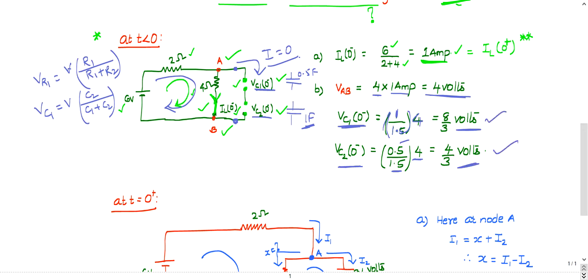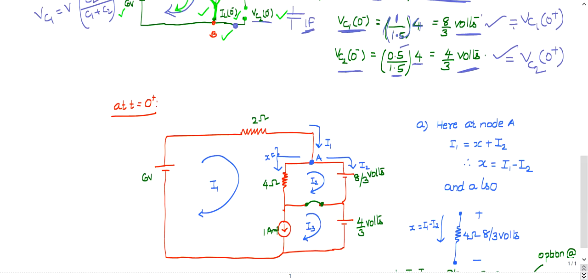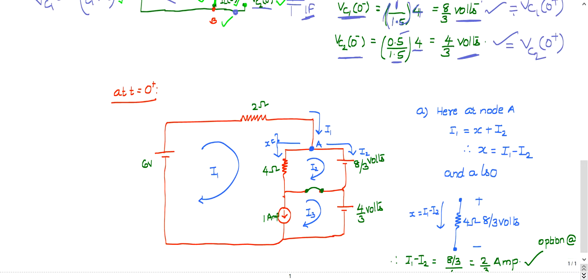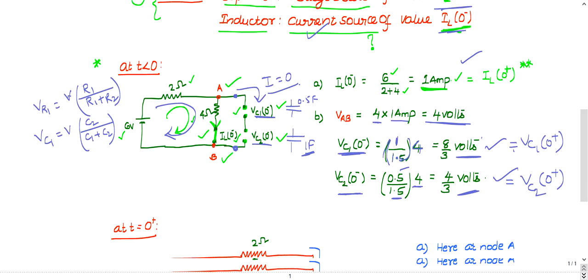So we have VC1(0-), VC2(0-), and I_L(0-) computed. Since voltage across a capacitor and current through an inductor never change instantaneously, these are also the values at 0 plus. We now use these values in the t equal to 0 plus circuit.